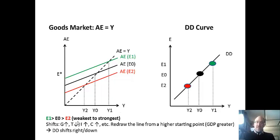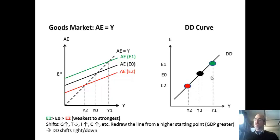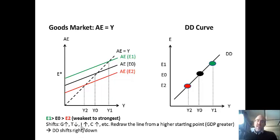If you want to shift the DD curve, consider an increase in government spending. Increasing aggregate expenditure for a given point leads to a way higher GDP. Redrawing the lines gives a rightward shift to the DD curve. Other things that could shift it include a tax cut, an increase in investment, autonomous investment, or autonomous consumption — all of these lead to a rightward shift in DD.